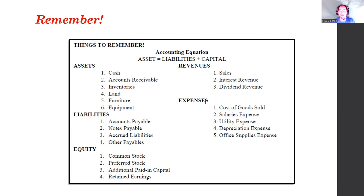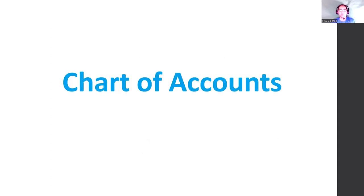Remember, the accounting equation is: assets equals liabilities plus capital. These are the account titles under the five major accounts — assets, liabilities, equity, revenues, and expenses. Now, speaking of those five major accounts, let us talk about the chart of accounts.